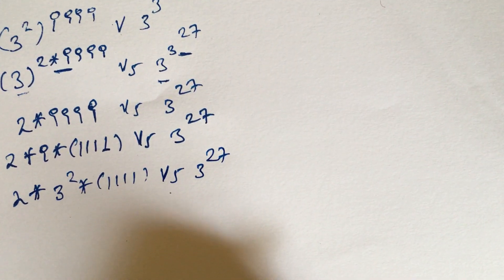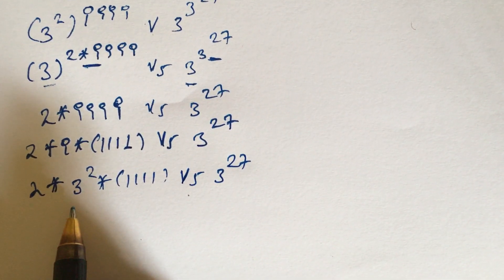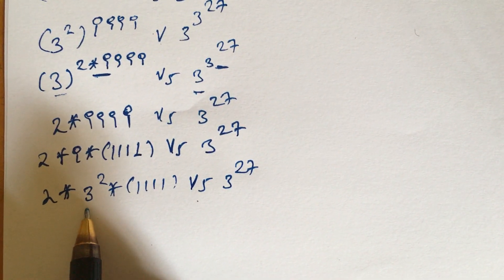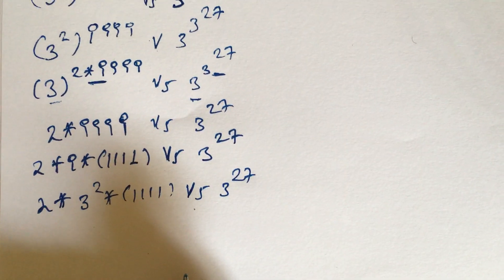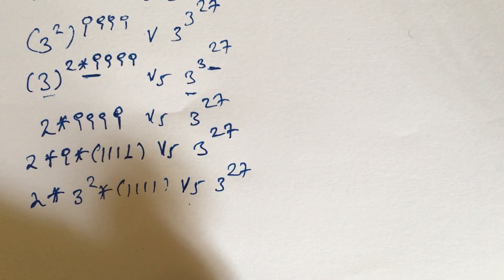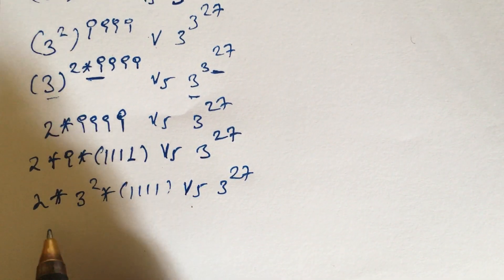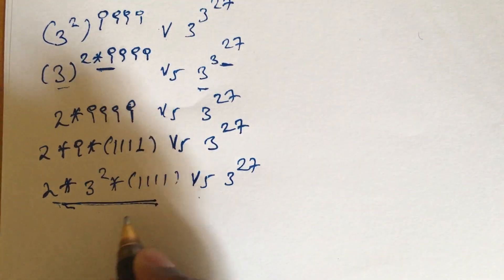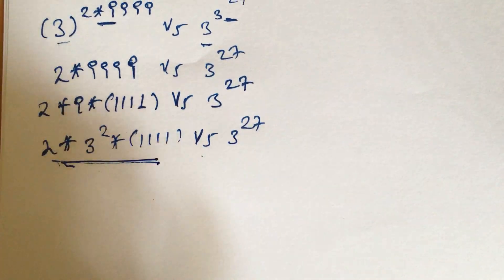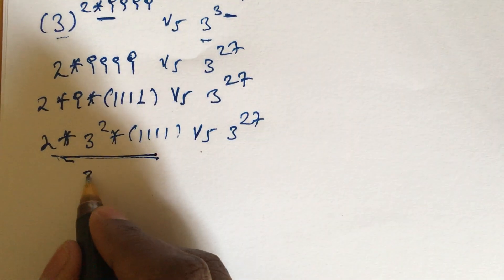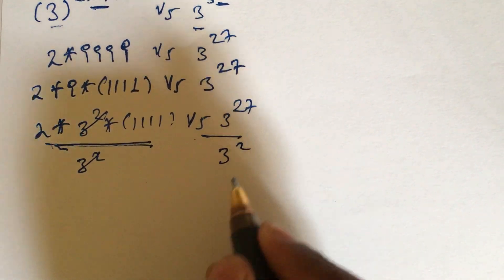Simplifying further: 4 times 9^9 equals 2 times 9^9 times something, and we use 3 squared. Since 3 squared appears on both sides, we divide both sides by 3 squared.